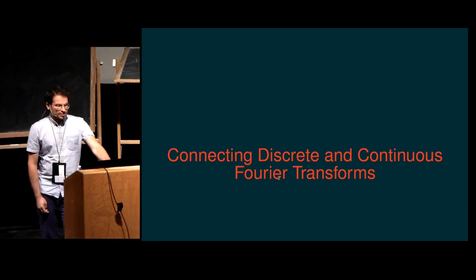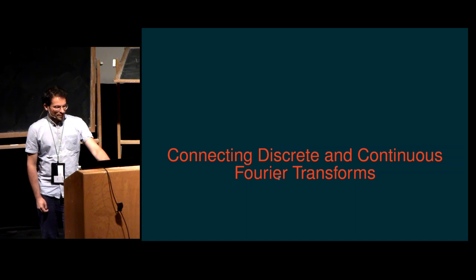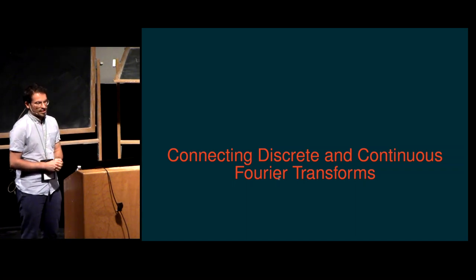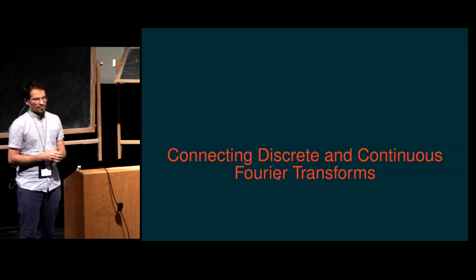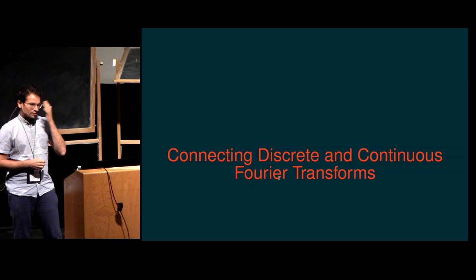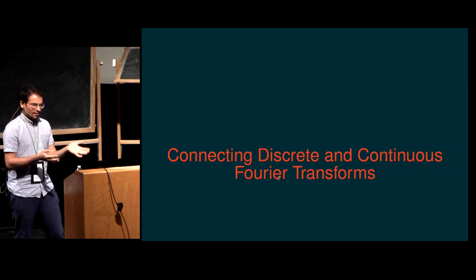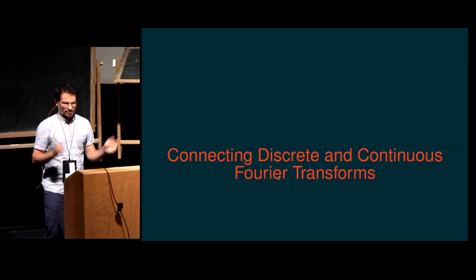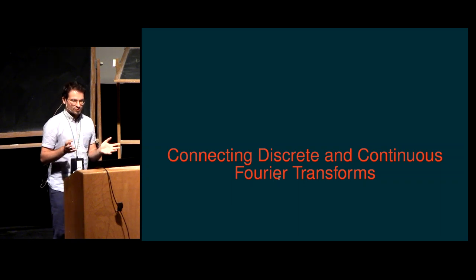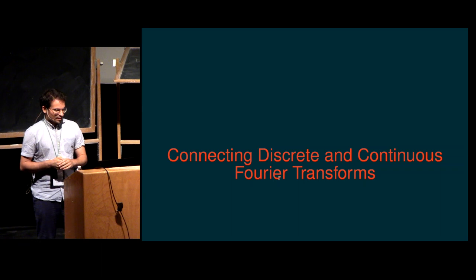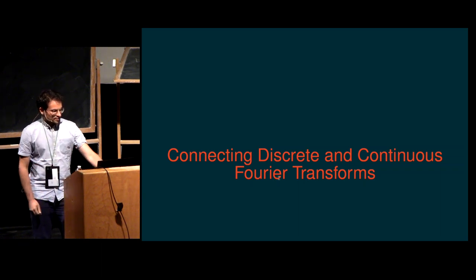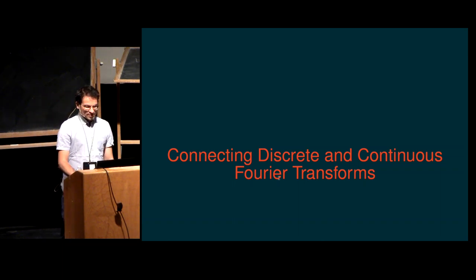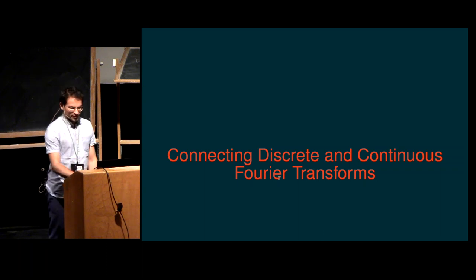In the second half of this lecture, I want to connect the discrete and continuous Fourier transforms. When I learned discrete Fourier transform, I already had background in continuous Fourier transforms from physics and just didn't see the connection — one is about vectors, the other about functions. We recently found a nice way to connect these two, and if you have any reference for this connection, please let me know.